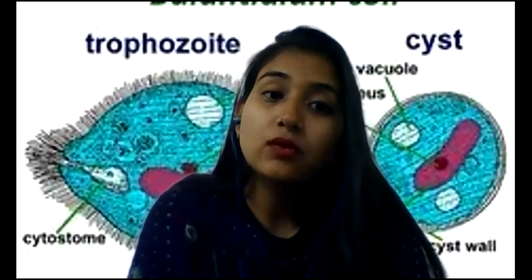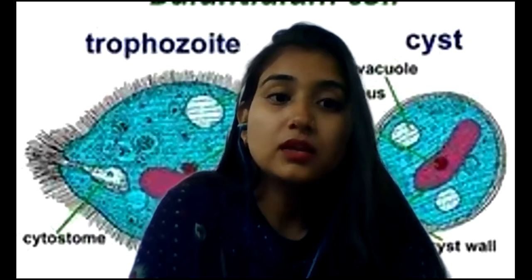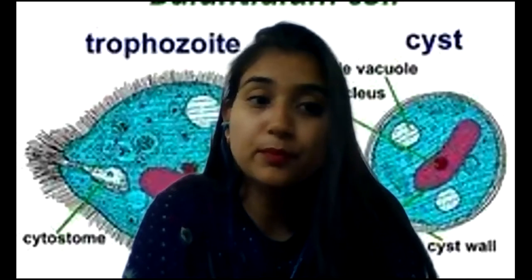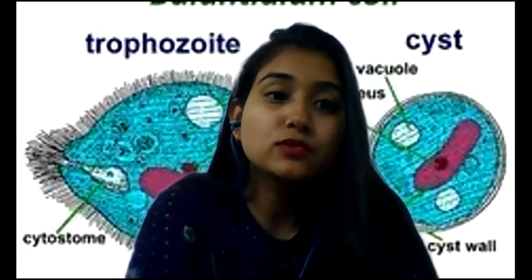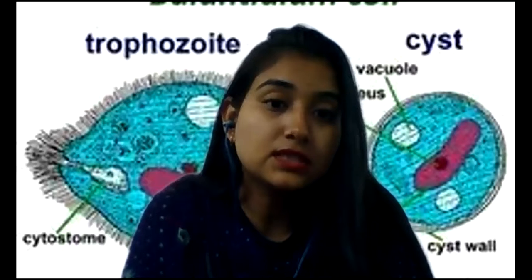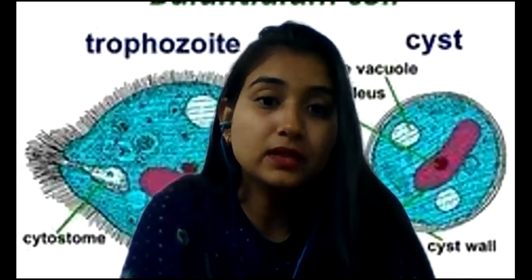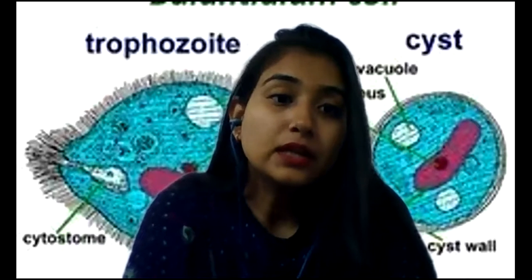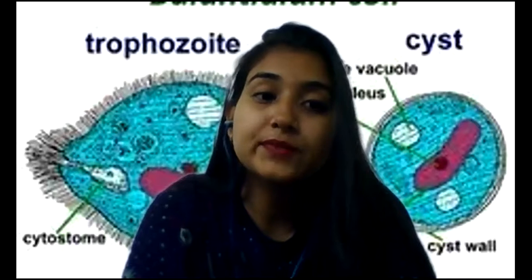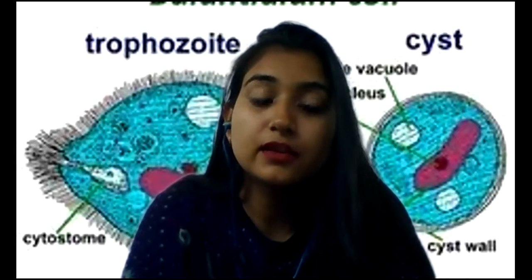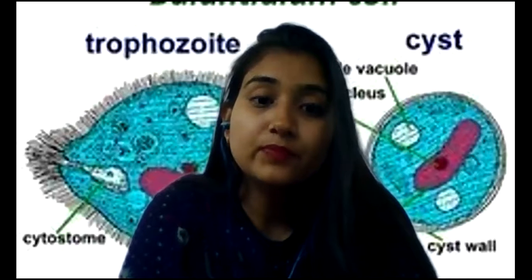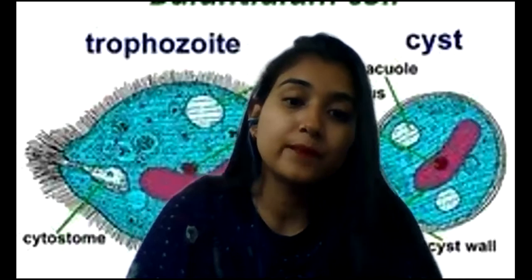Complications: immunocompromised and malnourished people may develop perforation of the large intestine, involvement of the appendix, severe dehydration leading to renal failure. Extra-intestinal manifestations are rare but include liver abscess and pneumonia.